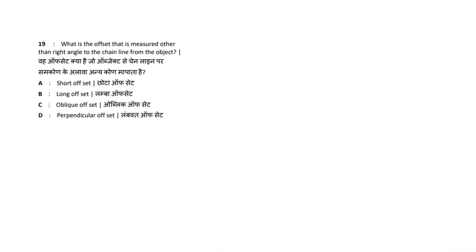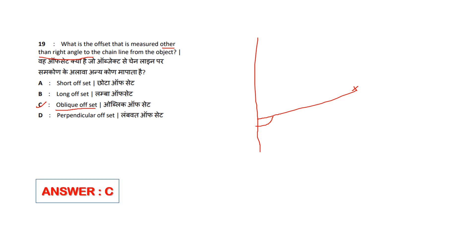Next question: What is the offset that is measured other than at a right angle to the chain line from the object? When the measurement is not at 90 degrees but at any other angle, it is called an oblique offset. An oblique offset is a lateral measurement taken at any angle other than 90 degrees to the chain line.